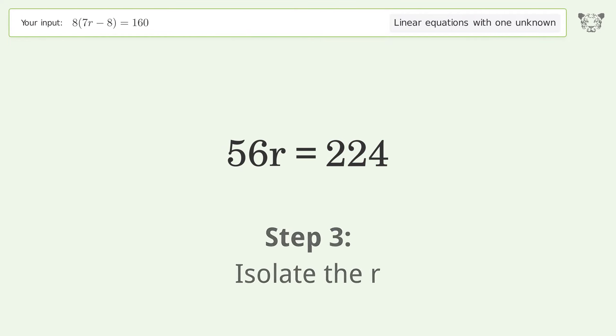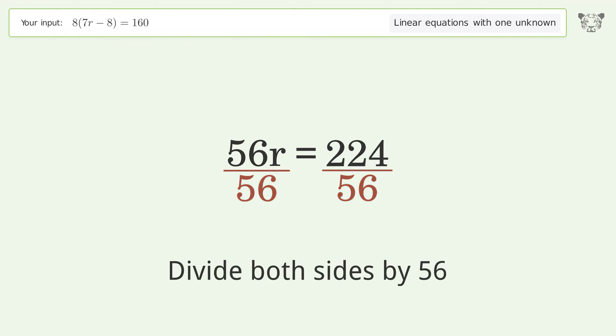Isolate the r. Divide both sides by 56. Simplify the fraction.